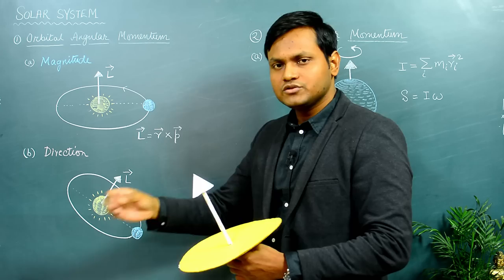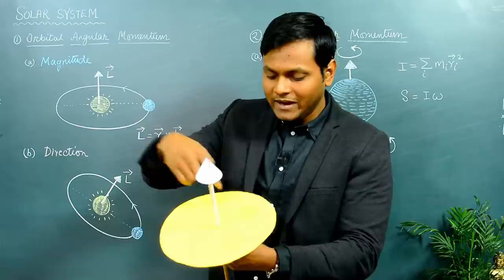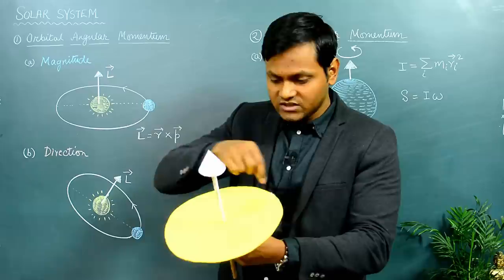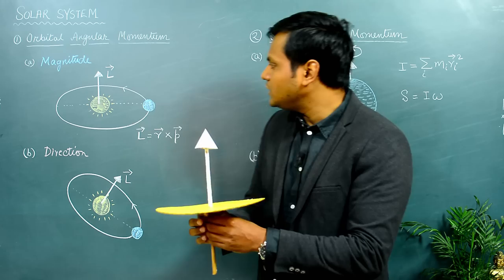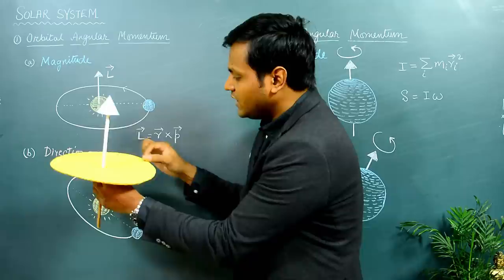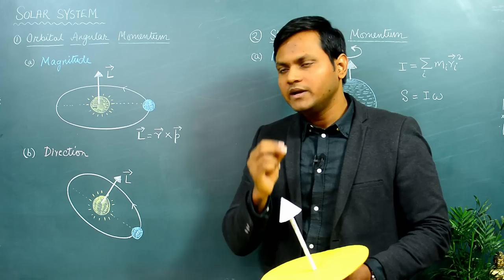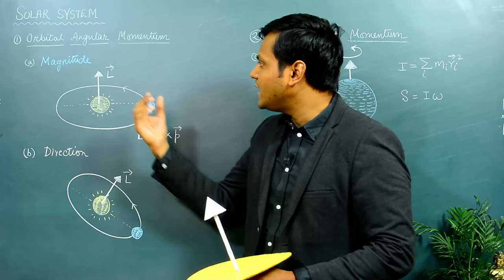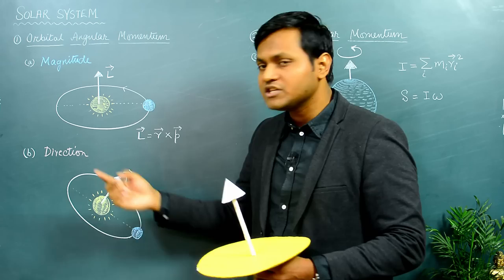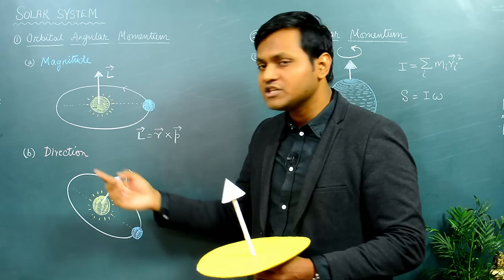In this 3D model, the yellow plane represents the plane in which the revolution is taking place, and the arrow represents the direction of the angular momentum. If the Earth is revolving around the Sun in this particular plane, the angular momentum is directed perpendicular to that plane. Angular momentum is a vector quantity — it has two components: the magnitude, which gives the value of the angular momentum, and the direction, which tells us where the angular momentum is pointing.